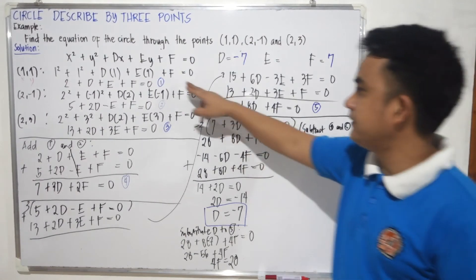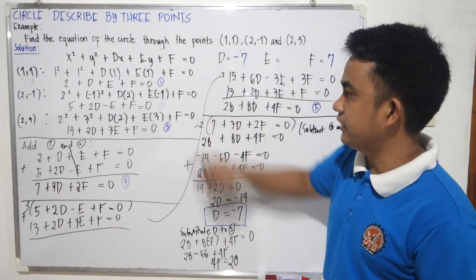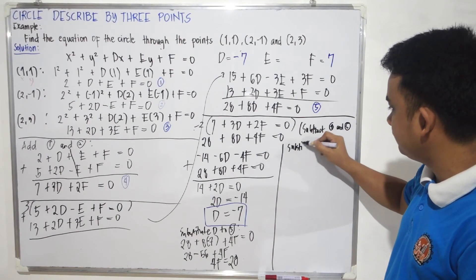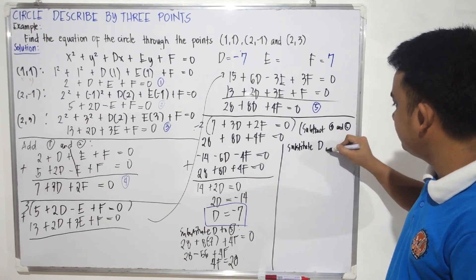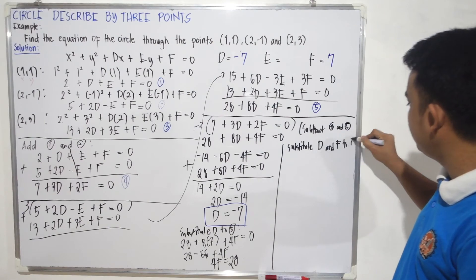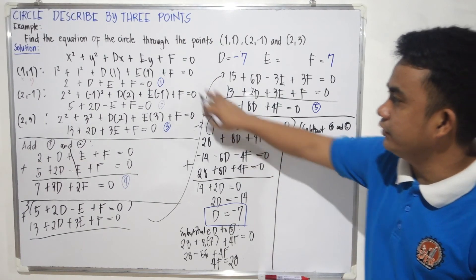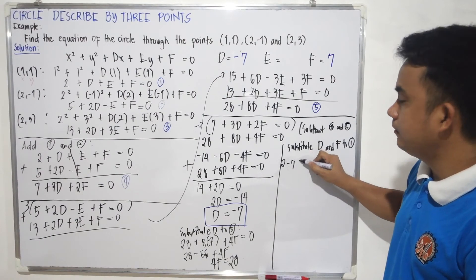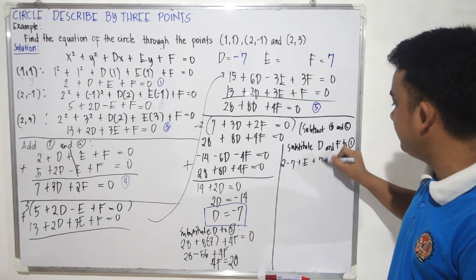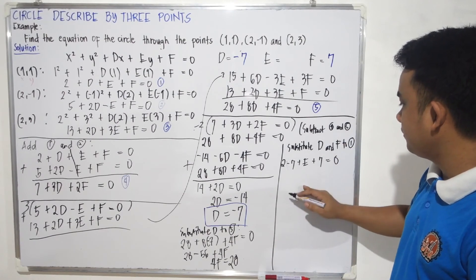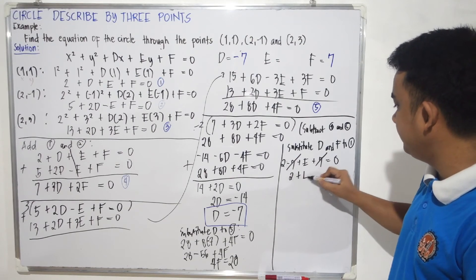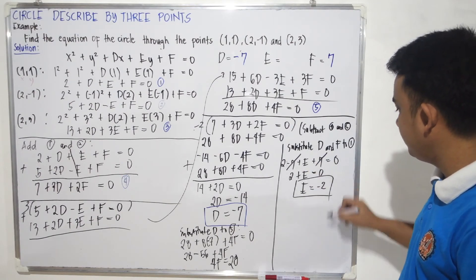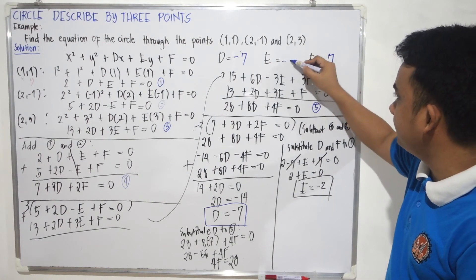To find e, we substitute d and f into equation 1. Equation 1: 2 plus d plus e plus f equals 0. Substituting d equals negative 7 and f equals 7: 2 minus 7 plus e plus 7 equals 0. The negative 7 and positive 7 cancel, leaving 2 plus e equals 0. Therefore, our value for e is negative 2.